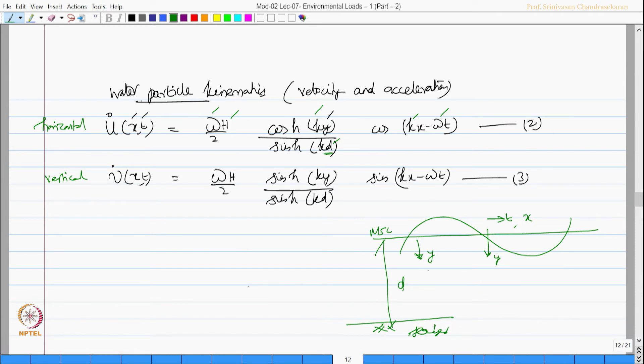If I differentiate once I get the acceleration. So I say ü(x,t) which is nothing but the derivative of u̇(x,t) equation 2. I will get (ω²h/2)(cosh(ky)/sinh(kd))sin(kx - ωt). Similarly, (ω²h/2)(sinh(ky)/sinh(kd))cos(kx - ωt). I call this equation number 4 and equation number 5.